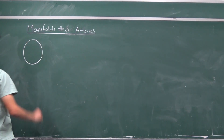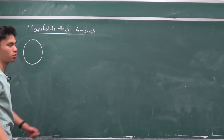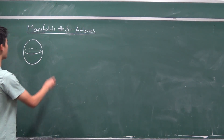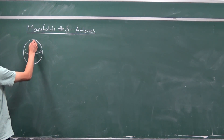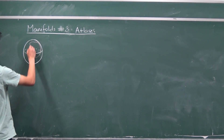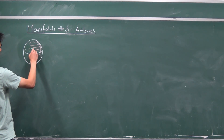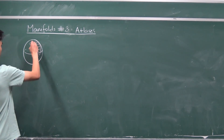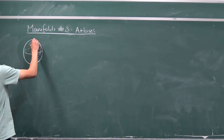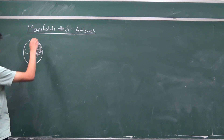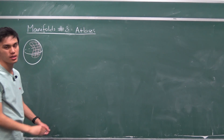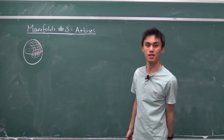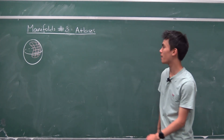You start with a very abstract topological manifold, and what a chart does is it gives a small region in that manifold some coordinates. You define some kind of chart map which associates every single point in that domain to a concrete list of numbers in Euclidean space.